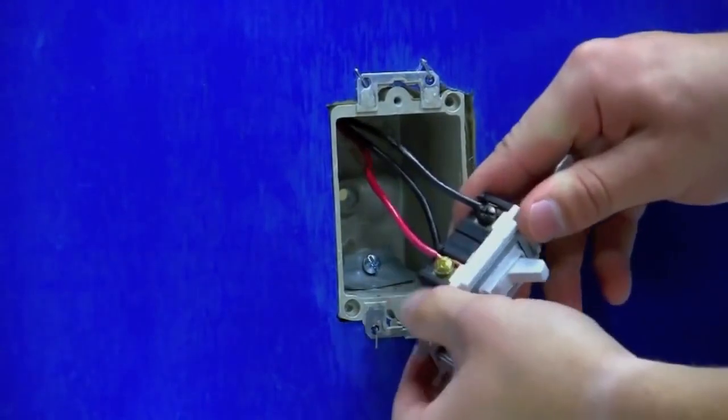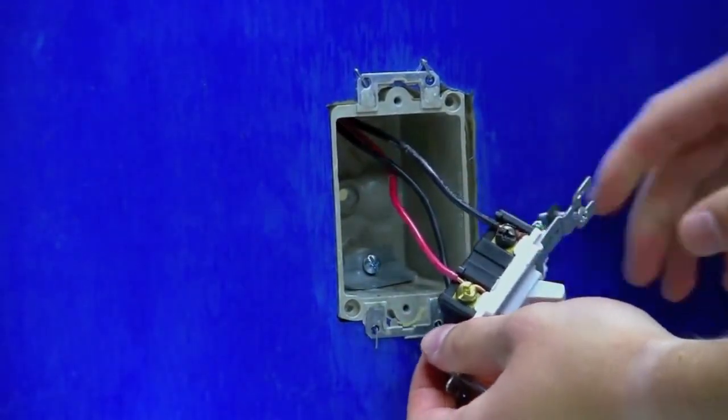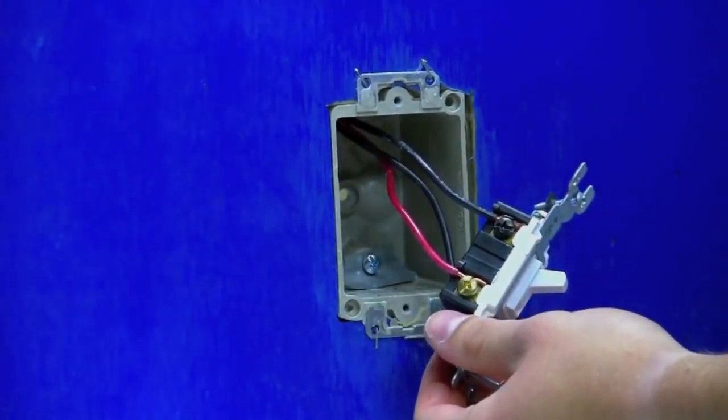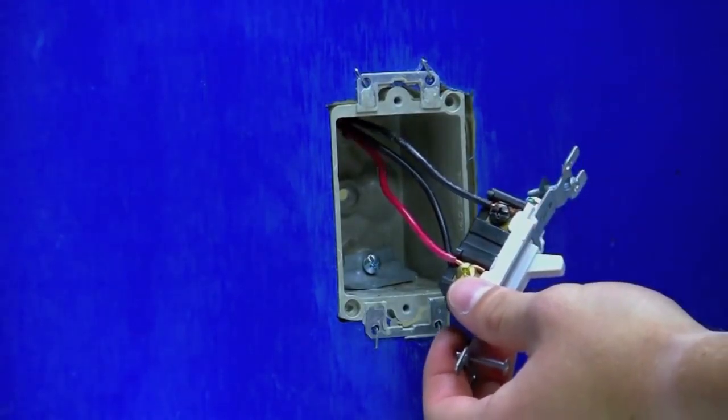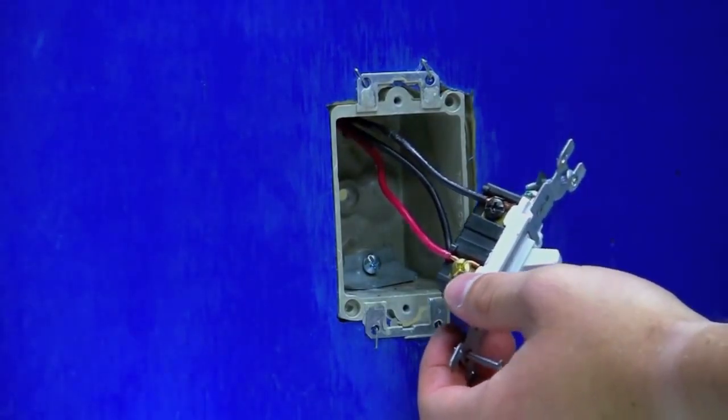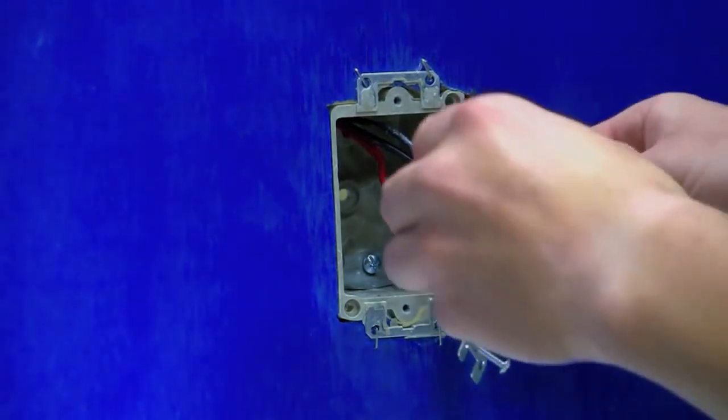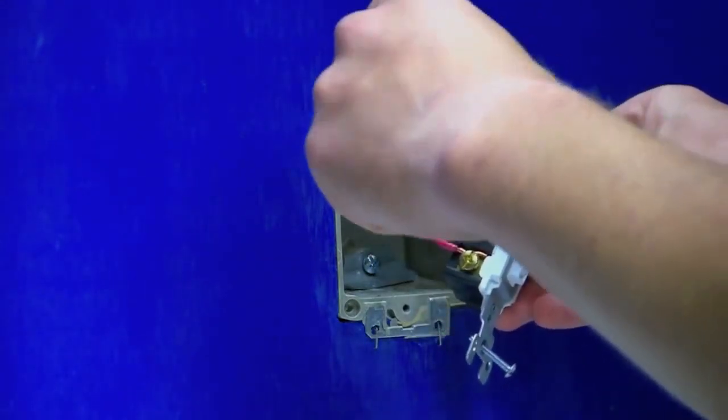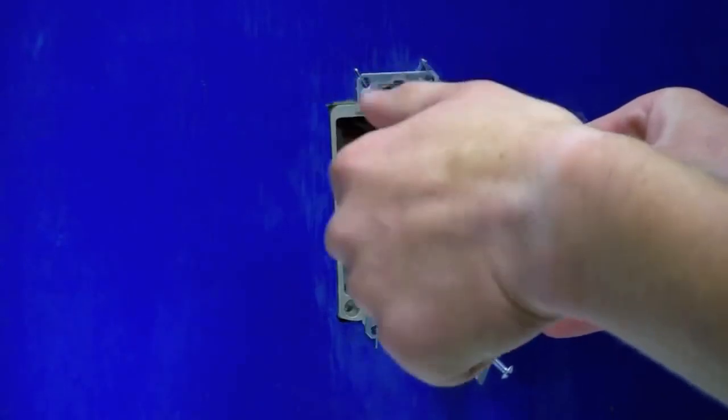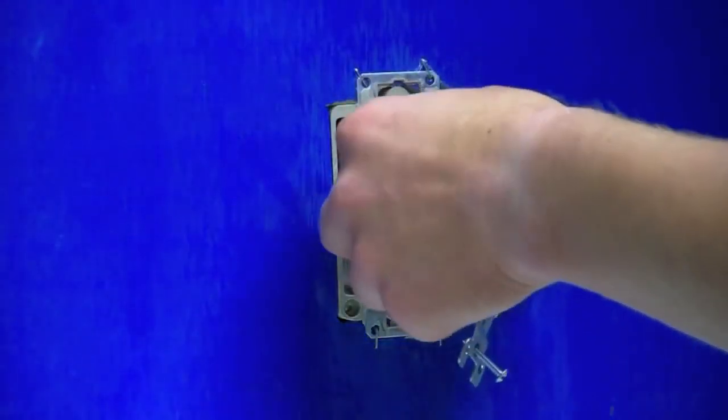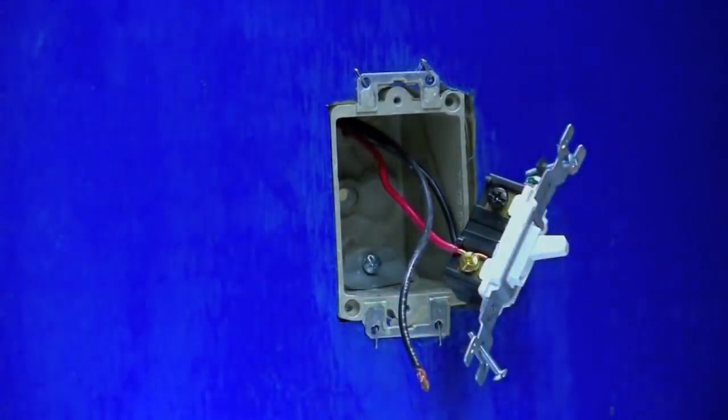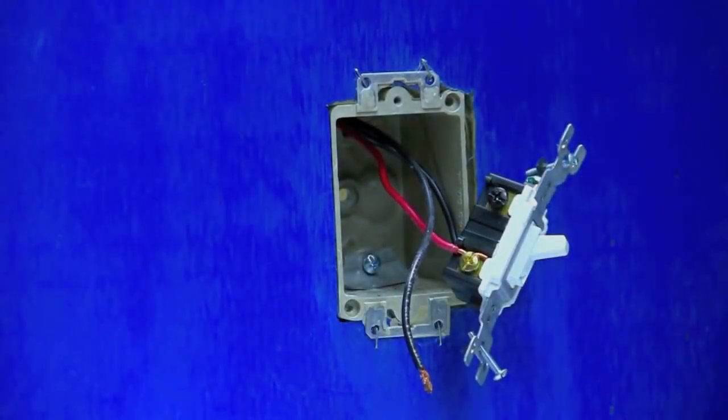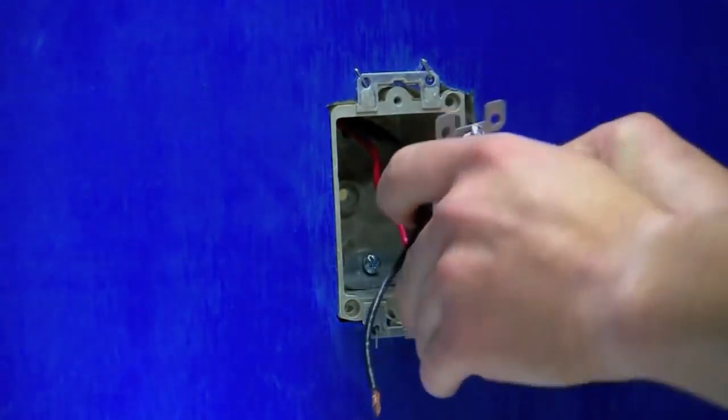Now that we've got the other three-way switch removed from the wall we need to again locate the common terminal and remove the wire from the common terminal. Again the common terminal on a three-way switch is the odd colored screw. Now that we have our common wire removed we need to remove the wire that we noted before that is connected to the blue wire from the switch.